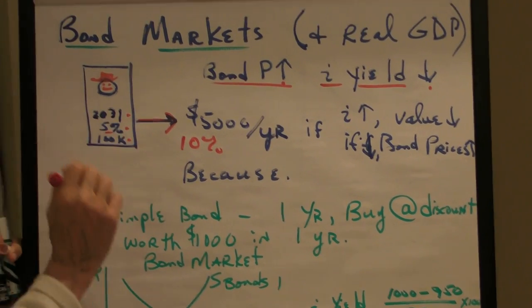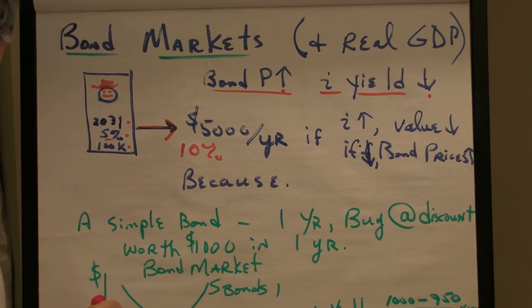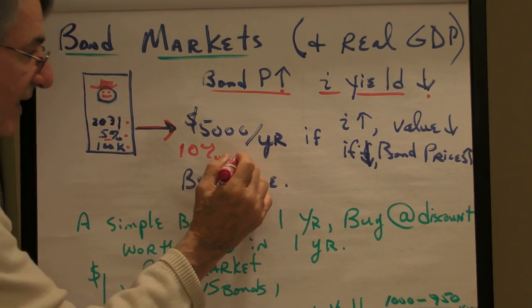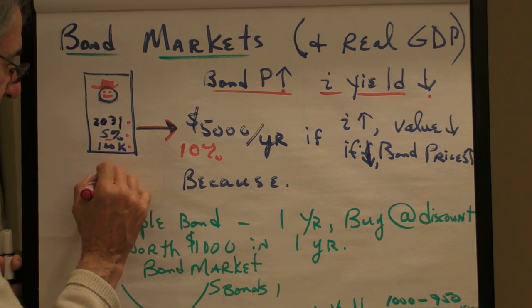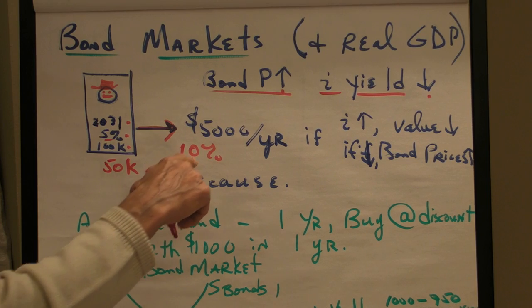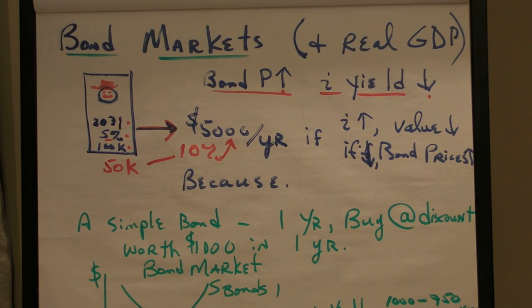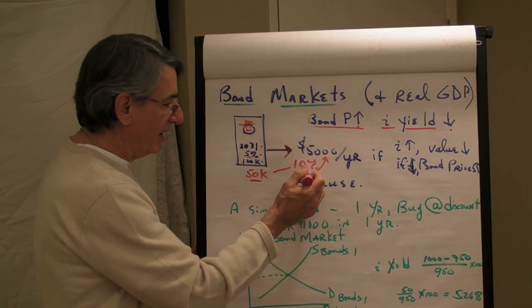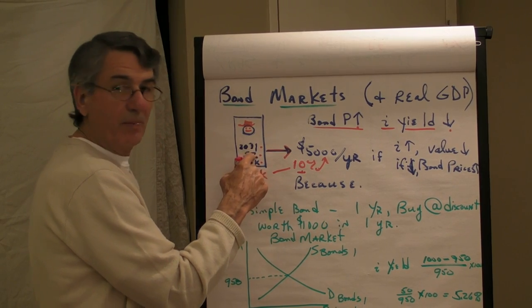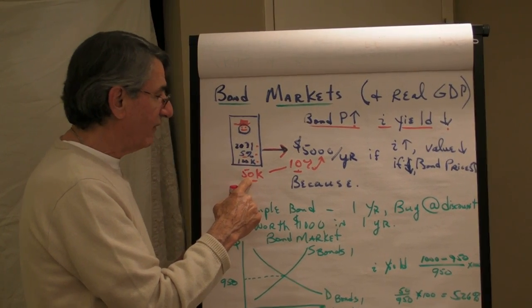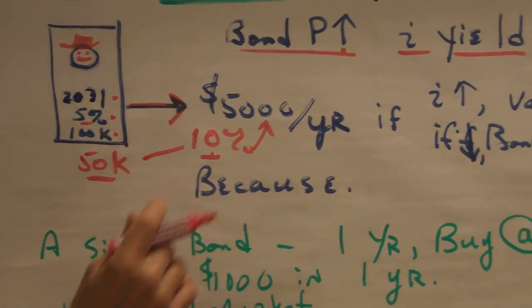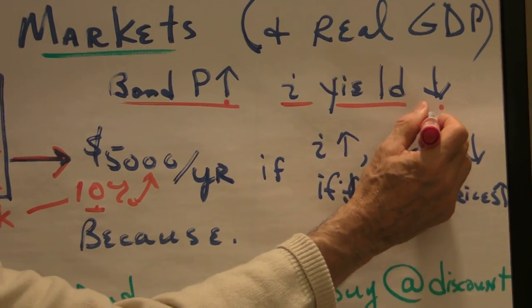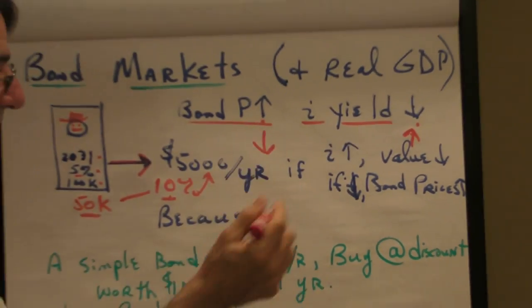How much money do you have to invest now in order to get $5,000 a year yield? The answer is, if the prevailing interest rates are 10%, you can invest $50,000. If you invest $50,000 at 10%, that will pay $5,000 yearly. So if the prevailing interest rates go up to 10%, this bond is less valuable. It's now only worth $50,000 or so compared to $100,000 before. So when the bond yields go up, the value of the bond goes down and vice versa.